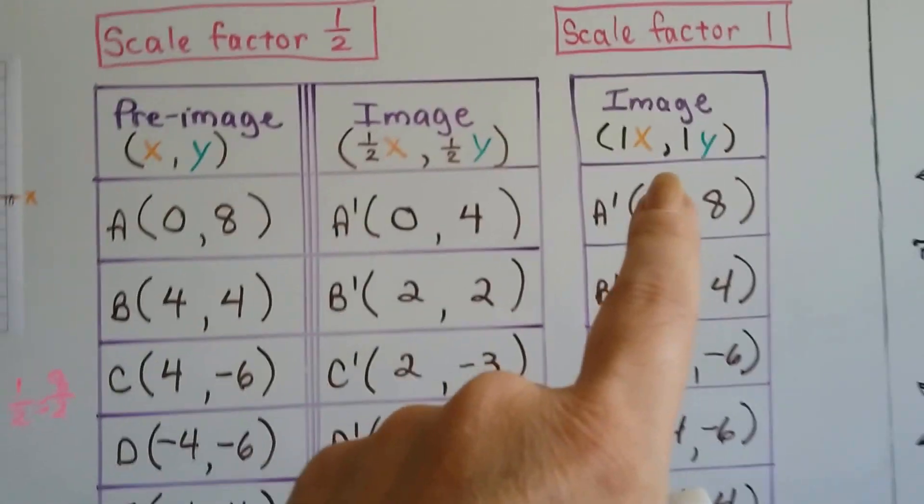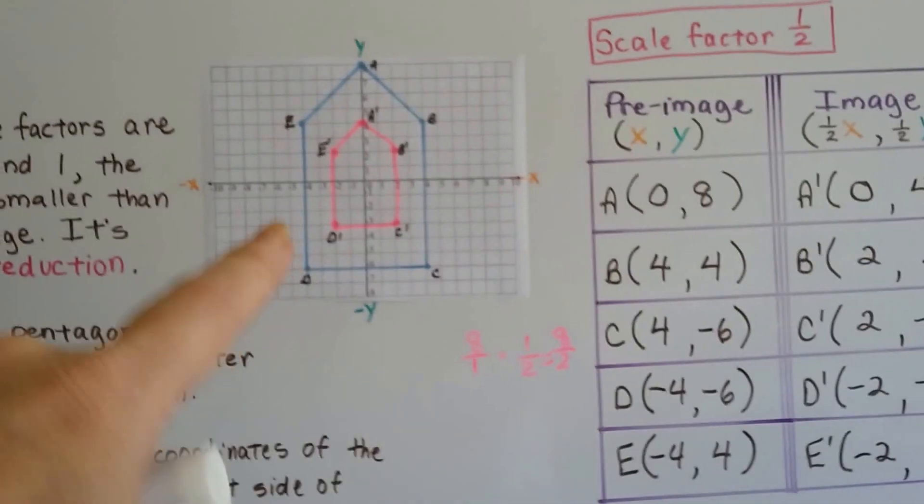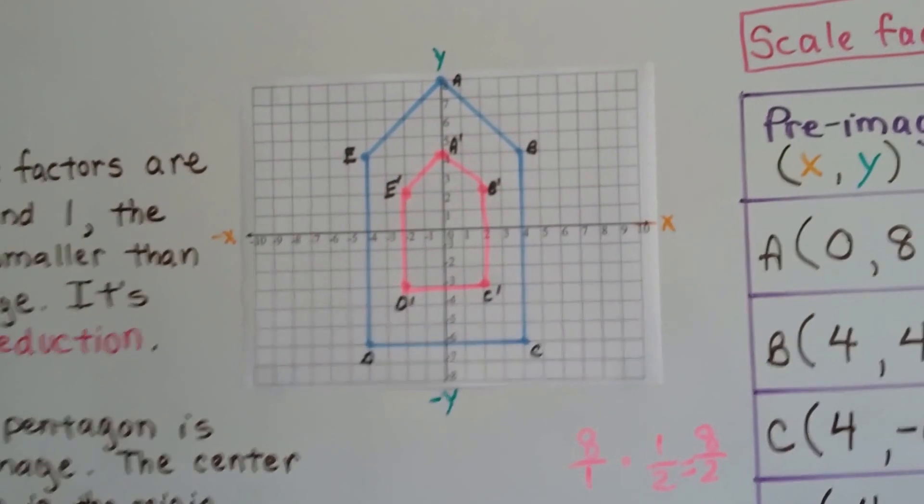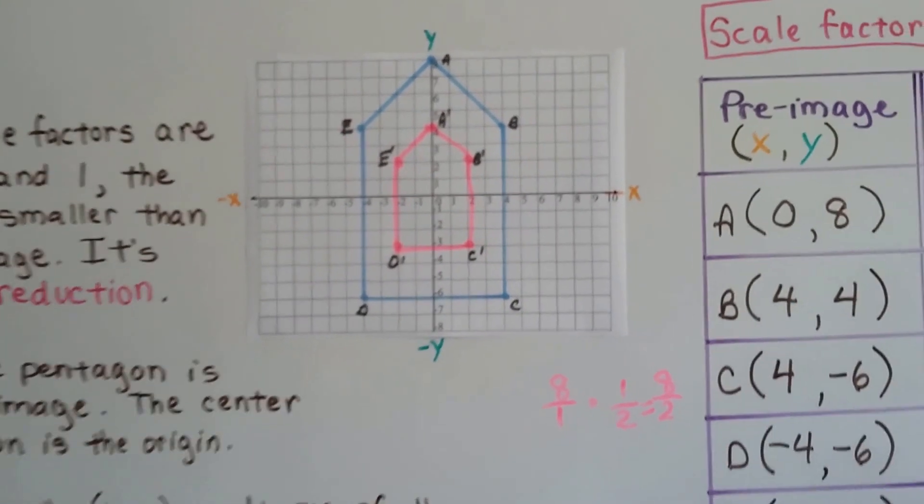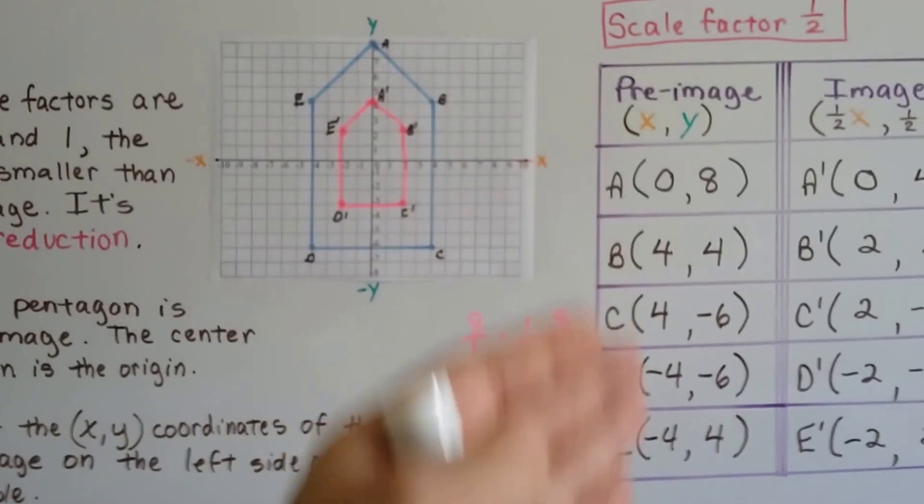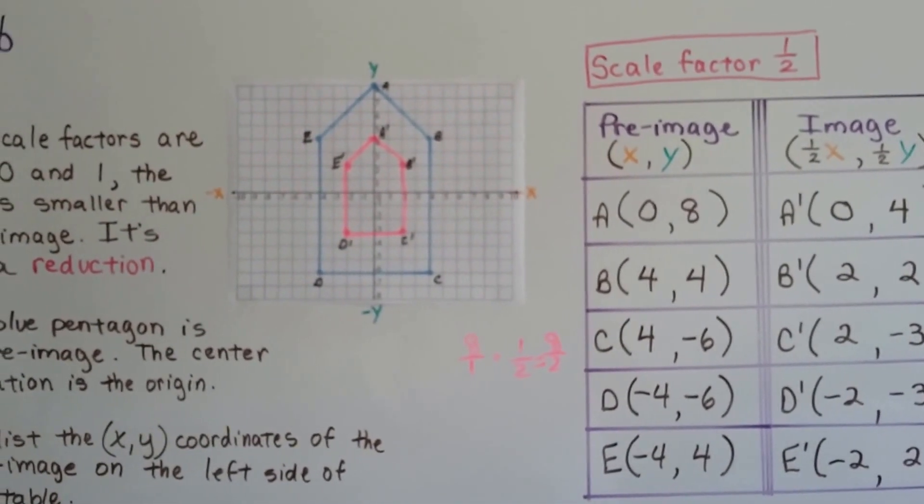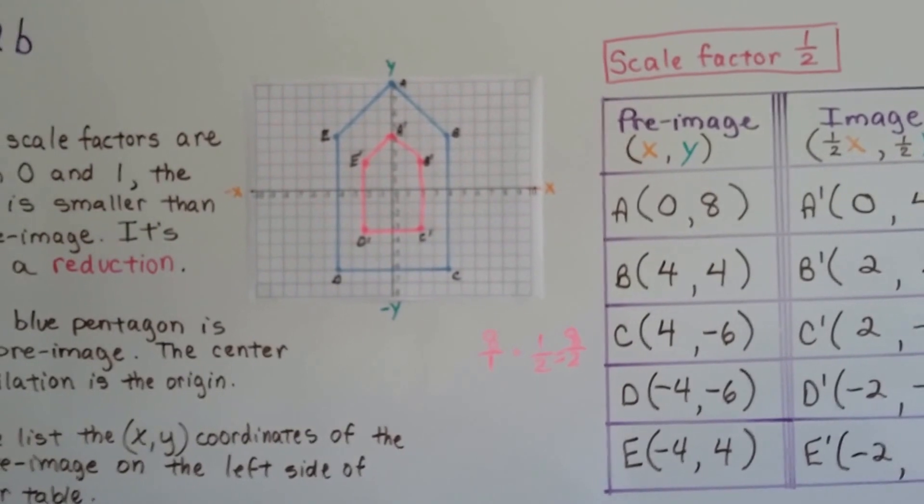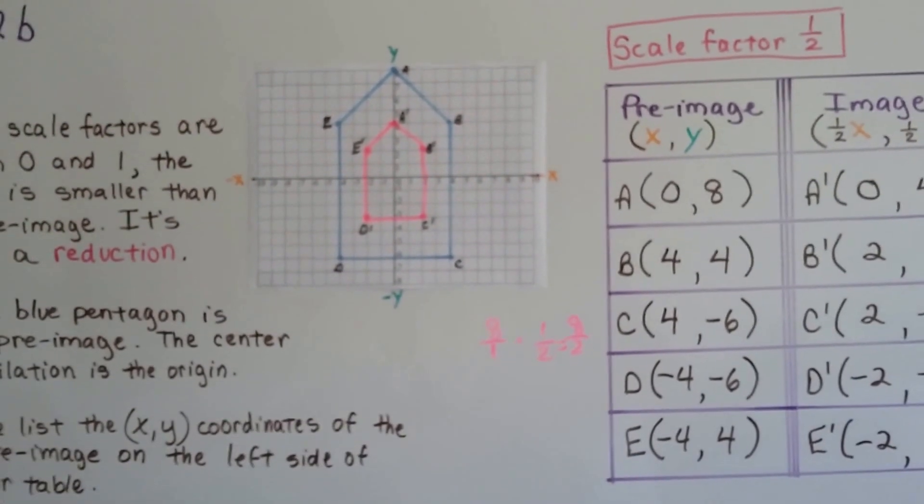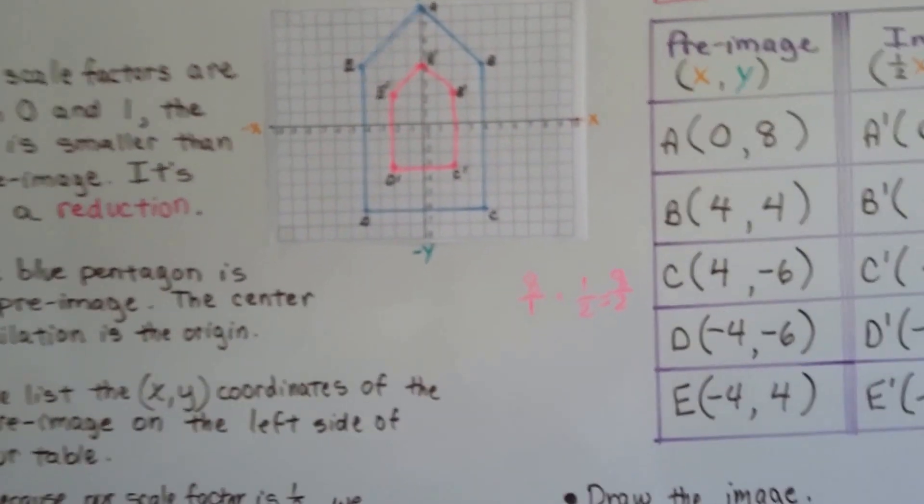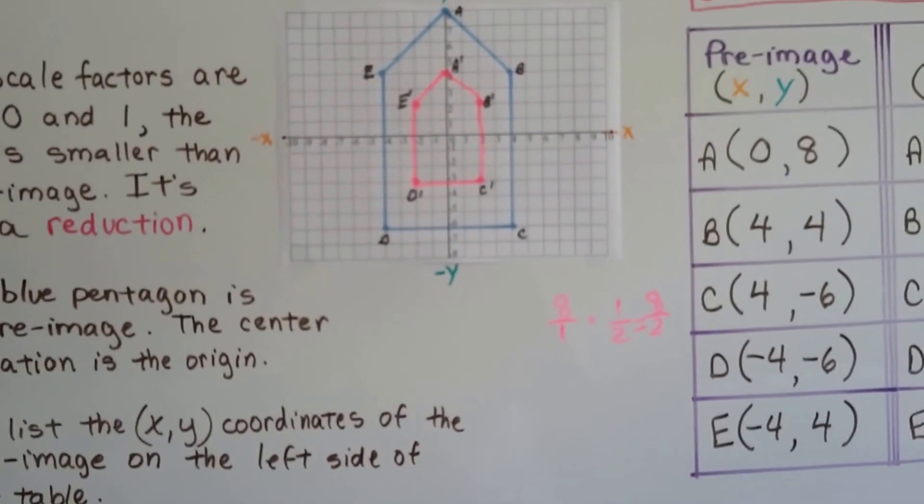So if our scale factor was 1, our image would be drawn on top of the blue one. It would be the same. It would have the same coordinates. Because we're just multiplying these by 1, and you know what the rule is for 1, right? The identity rule. It stays the same. That's the identity rule. You don't change its identity when you multiply it by 1.